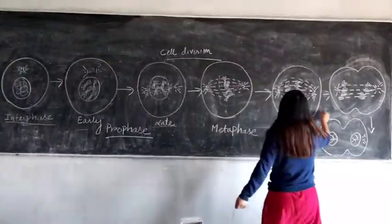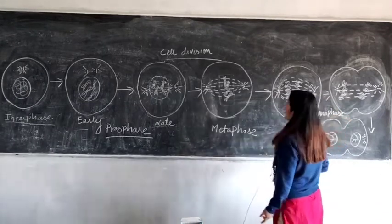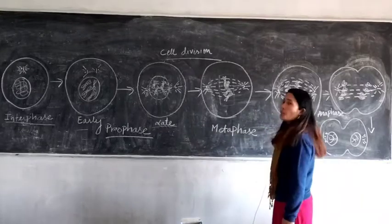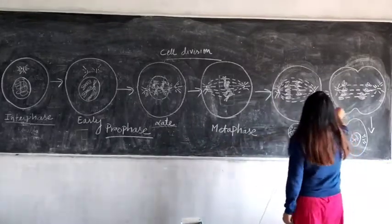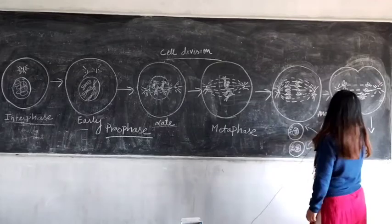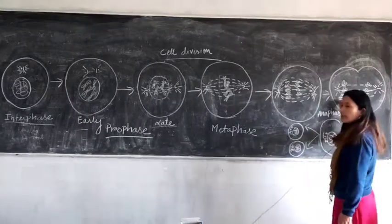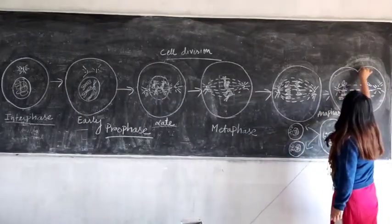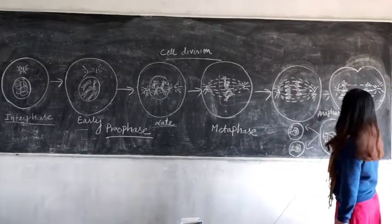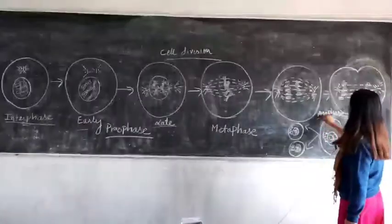After metaphase comes anaphase. In early anaphase, the sister chromatids have separated and are moving towards the polar ends. In late anaphase, the sister chromatids have already moved to the polar ends. Along with the movement of the sister chromatids, you can also see furrow formation taking place in the cell. As soon as you see the furrow and the sister chromatids moving to the polar region, you know it is anaphase.